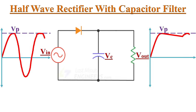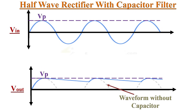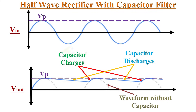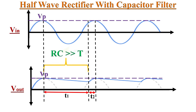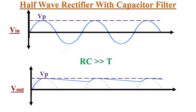When the next peak arrives at the input, the diode conducts briefly and recharges the capacitor to the peak value, and the output voltage again equals Vp. Analyzing the input and output waveforms, we get an output with slopes showing the discharging of the filter capacitor and peaks showing the charging. Consider t1 as the discharging period and t2 as the charging time of the capacitor. Here we assume that the RC time constant of the filter circuit is much larger than the time period of the waveform, so using larger-value capacitors or increasing the RC time constant increases the discharging time.